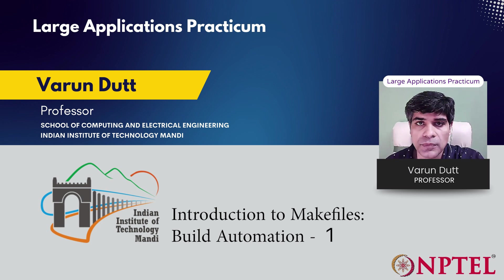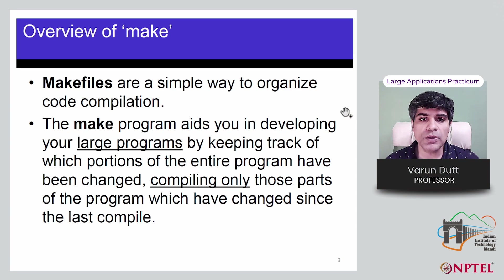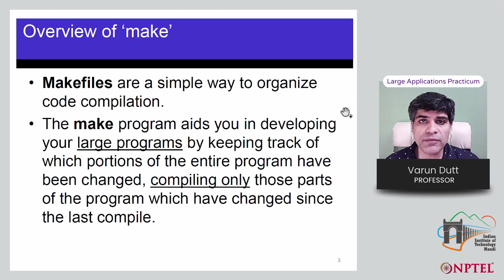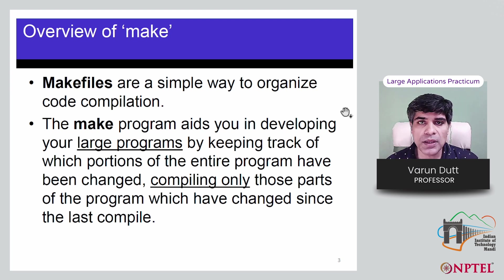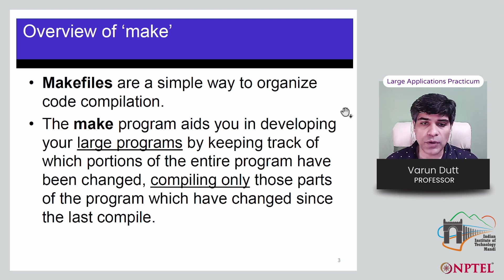Let's get started with the make utility and see how it works. The make utility is available in Linux or Unix-like operating systems and it looks for a file called a makefile. A makefile is a simple way to organize code compilation. Make allows you to write certain rules in makefiles which, when make is called on the command prompt, reads the makefile and runs those rules from top to bottom, enabling the compilation or linking of the program.